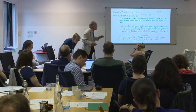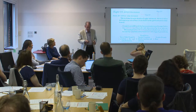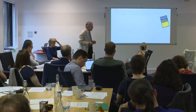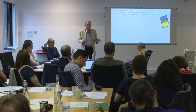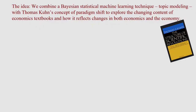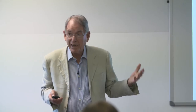So what Wendy and I thought we would do is just have a look at Samuelson with respect to what we're doing today using a text analysis, drawing upon the work of Thomas Kuhn. The idea is to use what's called topic modeling — a Bayesian machine learning statistical technique for analyzing texts — and put that together with Kuhn's idea of scientific revolutions. Kuhn said the scientific community's paradigms are revealed in its textbooks. So what good undergraduates learn is the content of a paradigm. We decided to follow that, but also look at it quantitatively.